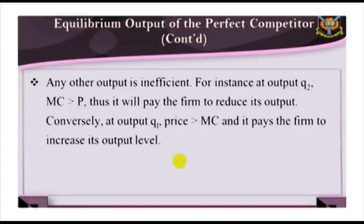It should be reiterated that in the short run, the firm can make profit, a loss, or break even. The actual position of the firm depends on the position of the average cost. If, at the equilibrium output level, price is greater than average cost, then it will make profit. On the other hand, it could make a loss if it is not covering average cost. Even when the firm is making a loss, it could still continue in business provided it is able to cover at least its average variable cost.